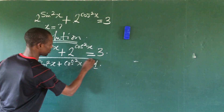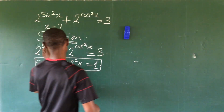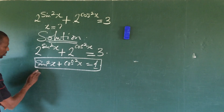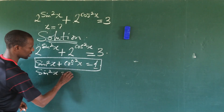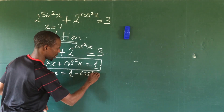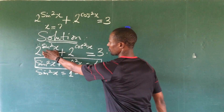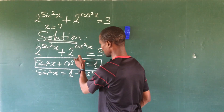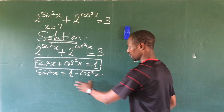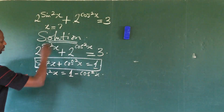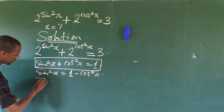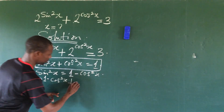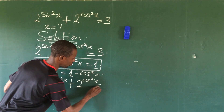Remember this? Good. So if we apply this trigonometrical identity, then we can do something special. From here, let's make sine squared x the subject of the formula. So sine squared x equals 1 minus cos squared x. Let's substitute this into our equation. So our equation will now become 2 to the power of (1 minus cos squared x), plus 2 to the power of cos squared x, equal to 3.